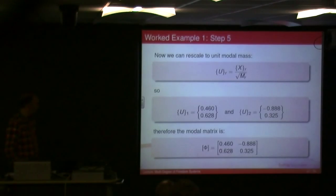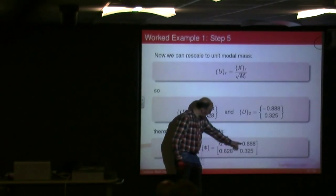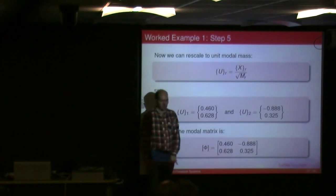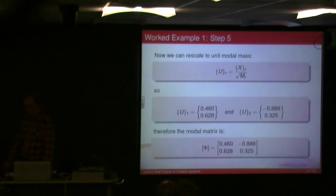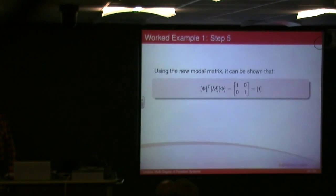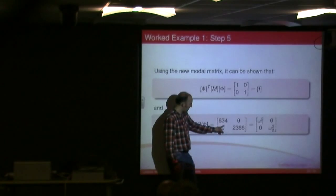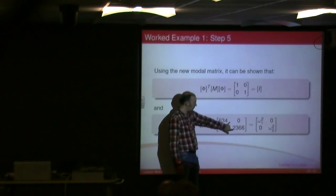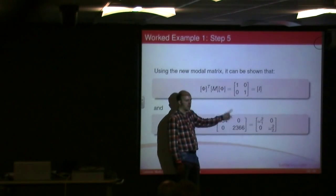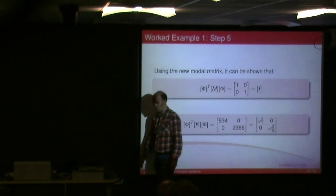There's our modal matrix, so we've taken our two new terms, plop them in, next to each other, inside a matrix, and that's our modal matrix. And so we know that that times by m times by phi will give us the identity matrix, and you do the same thing again, it just so happens if you do this, you get 634, 2366, which is what our omega squared terms were in the previous, when we were solving those problems.